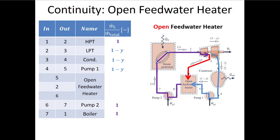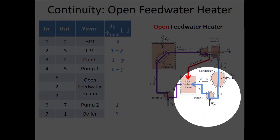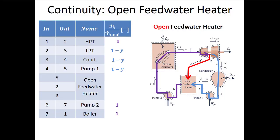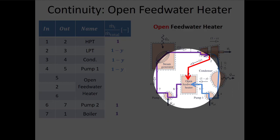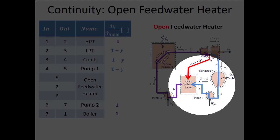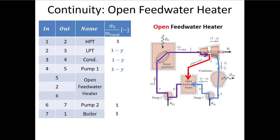Next, some components get the non-diverted mass flow rate — if y is 20%, this would be 80%. That includes the low pressure turbine, the condenser, and the first pump. In the open feed water heater, different mass flow rates are associated with each state: state two comes in at the diverted mass flow rate, state five comes in at the non-diverted mass flow rate, and state six comes out at the total mass flow rate.